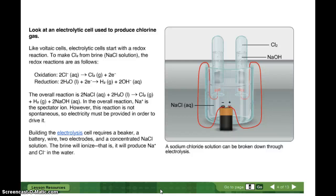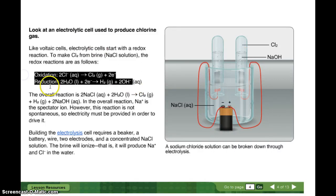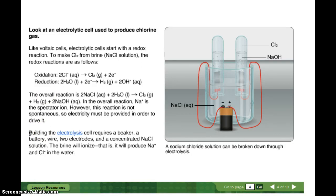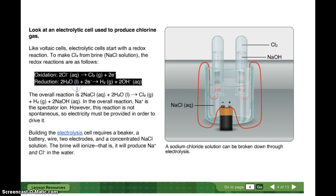If you have a spectator ion, it means it's there and you need to account for it, but notice how it doesn't appear in the oxidation and reduction reactions — that's why it's called the spectator ion. Basically, spectator ions can be ignored when you write the oxidation and reduction reactions.